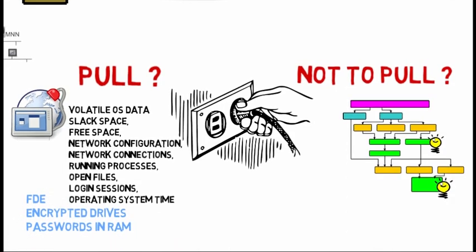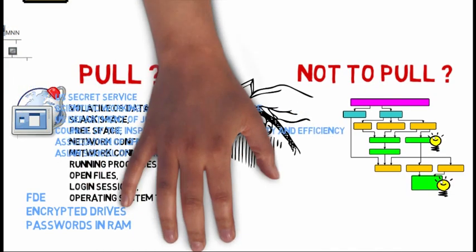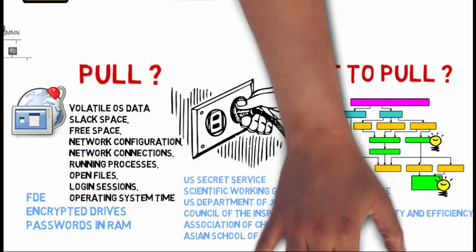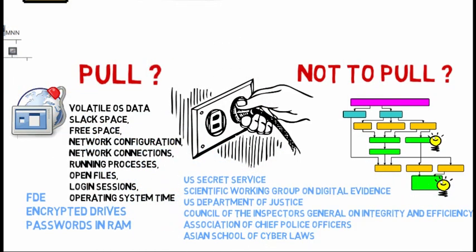There are many international standards that should ideally be followed in any forensic investigation — by the US Secret Service, the Scientific Working Group on Digital Evidence, the US Department of Justice, the ECPO, and the Asian School of Cyber Laws. All these standards are open, freely available, and should ideally be followed in every digital investigation.